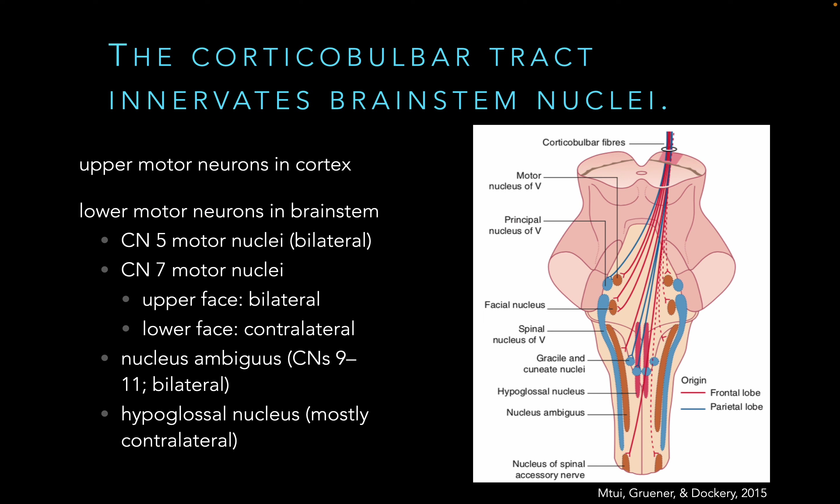The first one is the corticobulbar tract. The corticobulbar tract is kind of like the corticospinal tract, except it deals with connecting the cortex to the brainstem — that's what 'bulbar' means. So we still have upper motor neurons in the cortex, and the lower motor neurons, rather than being in the spinal cord, are in the brainstem. In general, corticobulbar fibers are bilateral.